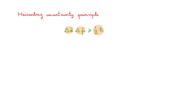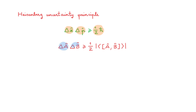It turns out that this is just a special case of the uncertainty principle. In reality there is an uncertainty principle for any pair of observables A and B. The most general form says that the root mean square deviation of observable A multiplied by the root mean square deviation of observable B is larger than or equal to one-half times the absolute value of the expectation value of the commutator of A and B. The key quantities are delta A and delta B, the root mean square deviations of these two operators.